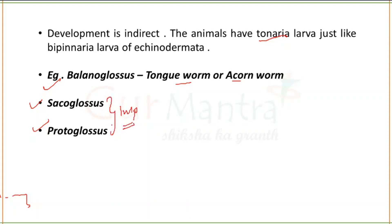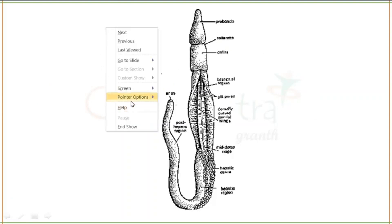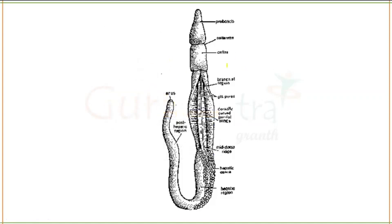If we talk about structure, the exam shows many different structures and asks which animal or phylum it belongs to. So you have to understand — if you see proboscis and collar, that is your Hemichordata.